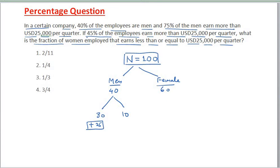Also it is given that 45% of the employees earn more than USD 25,000 per quarter, so this means in total is 65%. So 30 is from men, which means the remaining 35 will come from women.